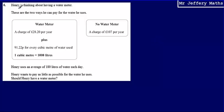This is question six. Here we're told that Henry is thinking about having a water meter. These are the two ways he can pay for the water he uses.